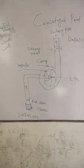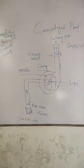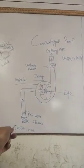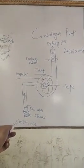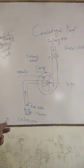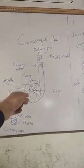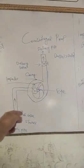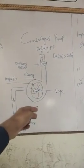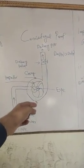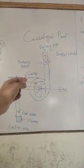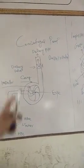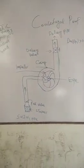Now let's discuss these parts. This pipe is called the suction pipe. This rotating part is called the impeller. The impeller's casing leads water to the delivery pipe.